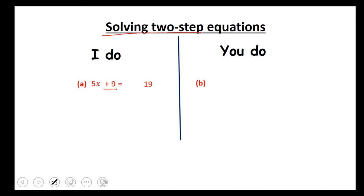Inverse of plus 9 is minus 9. So we subtract 9 from both sides. So now you get 5x equals 10.